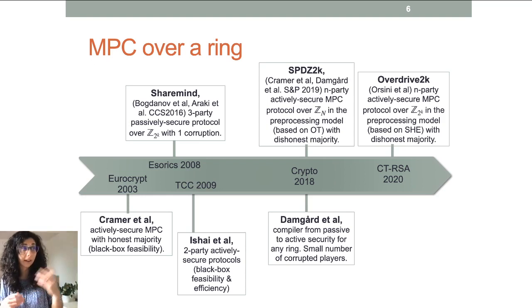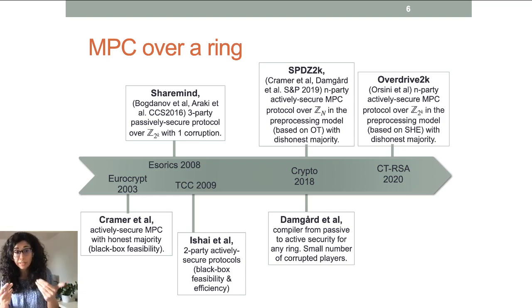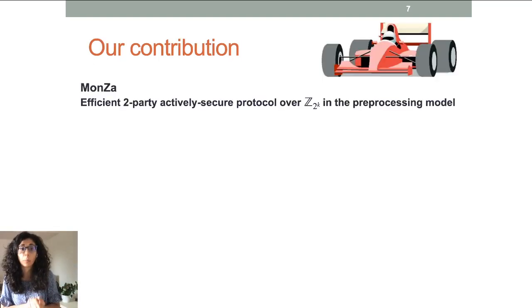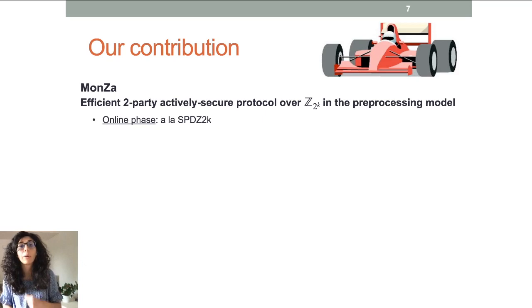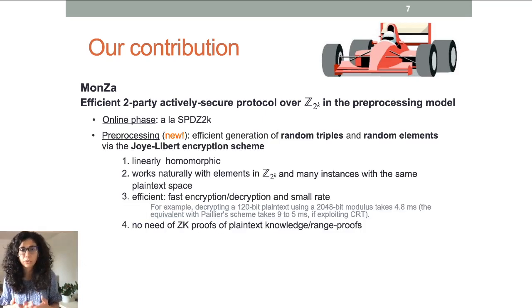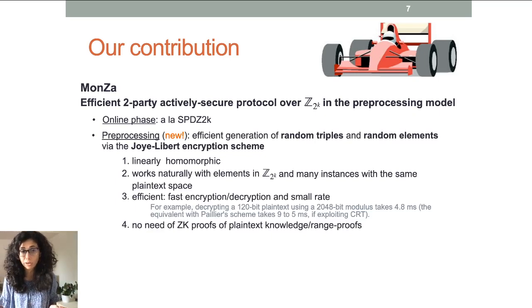There are already some variations of this protocol. With all this line of work, we present a new protocol called Monza, specific for the two-party case, achieving active security and, like SPDZ2k, operating in the preprocessing model. We have the same online phase as SPDZ2k but a different preprocessing. We use for the first time the Joye-Libert encryption scheme, which is very well suited for MPC preprocessing over the ring.